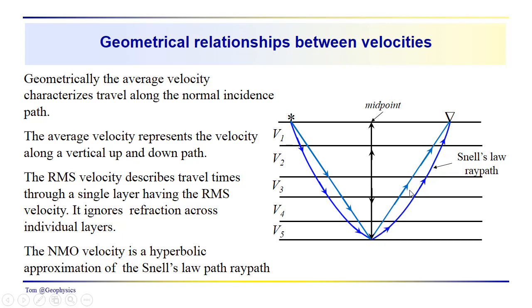So we can think of the RMS velocity as representative of this single layer reflection, which, of course, is hyperbolic. We've seen that. We saw that with the reflection event in layer one. We always see kind of a perfect fit between the actual arrival times and the NMO arrival times. In that case, the NMO velocity is equal to the RMS velocity, so in the upper layer.